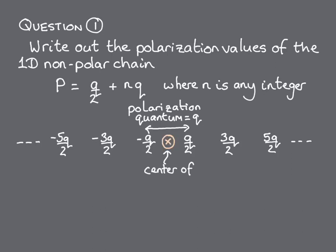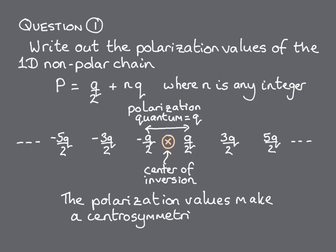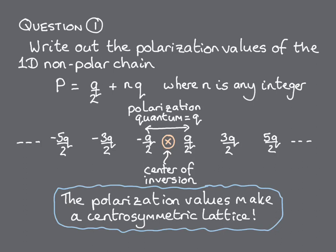And second, that the list has a centre of inversion at p is equal to 0, with all the numbers to the left of 0 on the negative axis being equal in magnitude to those the same distance away from 0 on the positive axis to the right. The property of being equally spaced means that the polarisation values form a lattice, and we see that for our non-polar centrosymmetric chain, the polarisation lattice is also centrosymmetric.